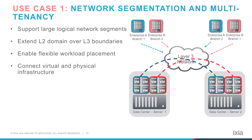Decoupling the logical network from the physical network makes it easier to manage, automate, and orchestrate by enabling fast programmatic provisioning of the network for any application. For connectivity of workloads residing across a layer 3 leaf-spine fabric, layer 2 domains need to be extended across the layer 3 boundaries.